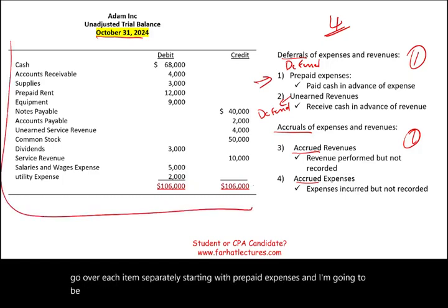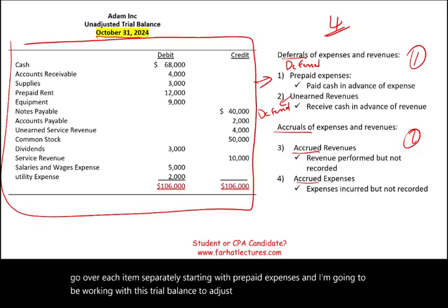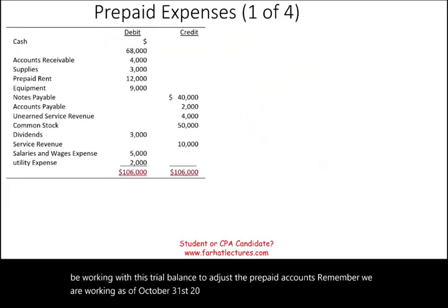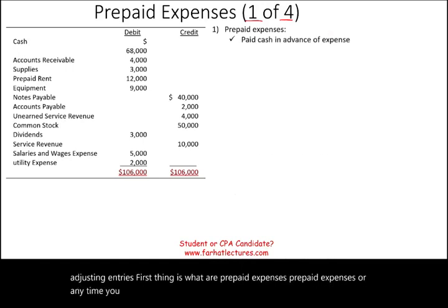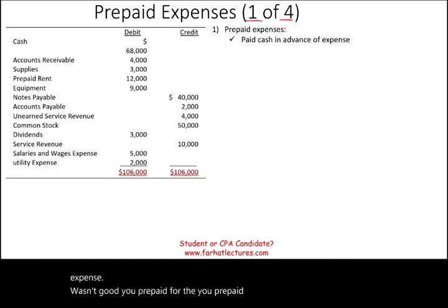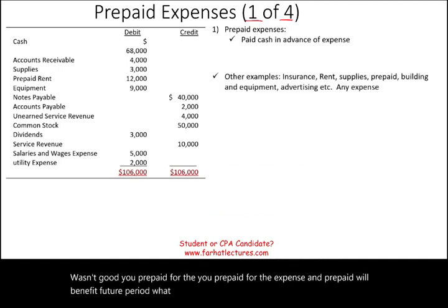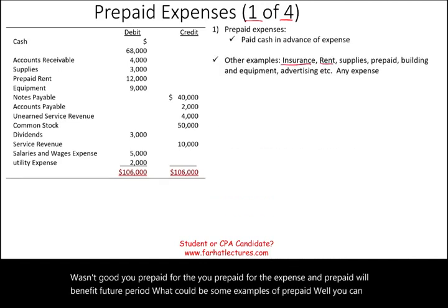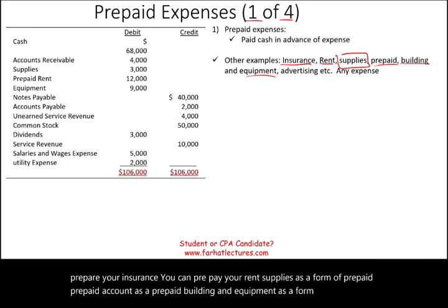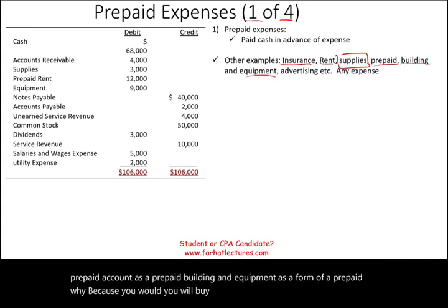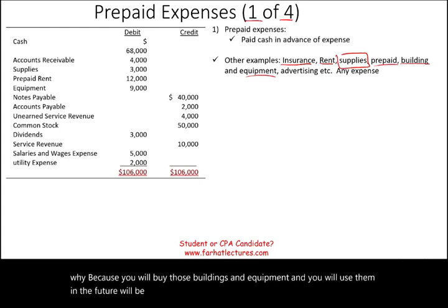I'm going to be working with this trial balance to adjust the prepaid accounts as of October 31st, 2024. Prepaid expenses are any time you pay cash in advance of the expense — before the expense is incurred, you prepaid for it, and that prepaid will benefit a future period. Examples include prepaid insurance, prepaid rent, supplies, and even buildings and equipment, because you buy them and use them in the future where the expense takes place. Simply put, any expense can be prepaid.